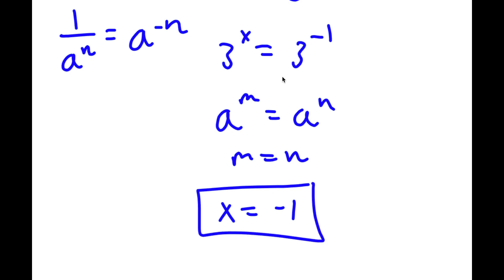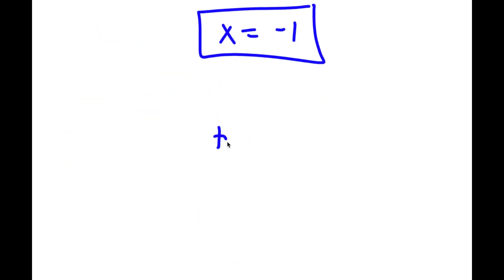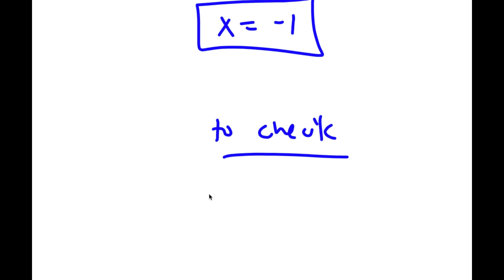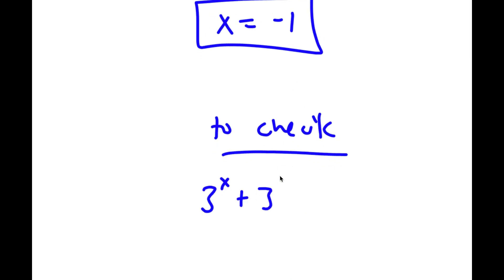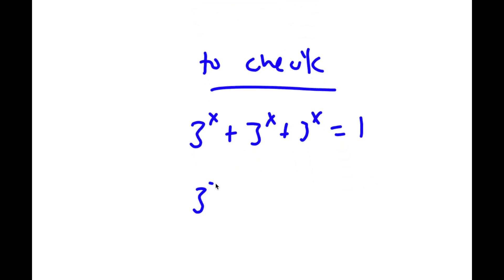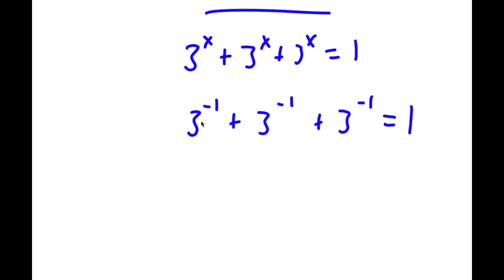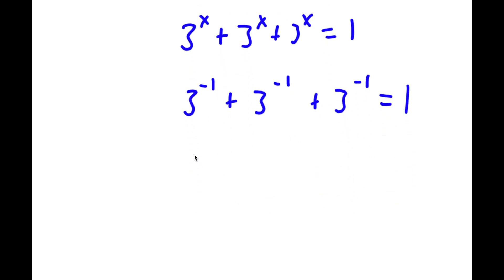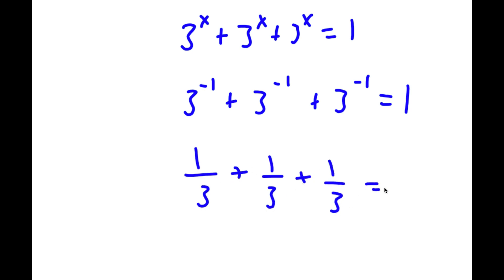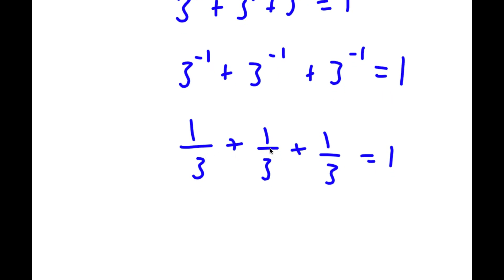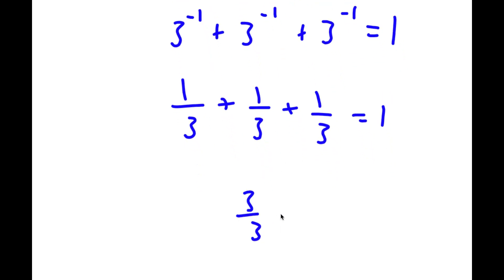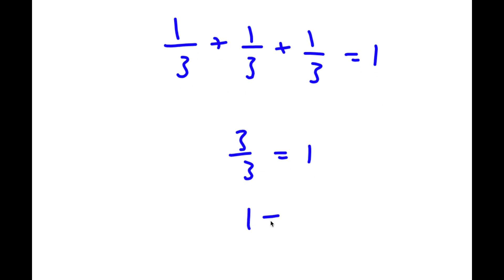So that's my answer again using the second method. Now to check: I have 3 to the power of x plus 3 to the power of x plus 3 to the power of x equals 1. With x equals negative 1, I have 3 to the power of negative 1 plus 3 to the power of negative 1 plus 3 to the power of negative 1. 3 to the power of negative 1 is 1 over 3, so I have 1/3 plus 1/3 plus 1/3, which equals 3/3 equals 1. So 1 equals 1 — my answer is right.